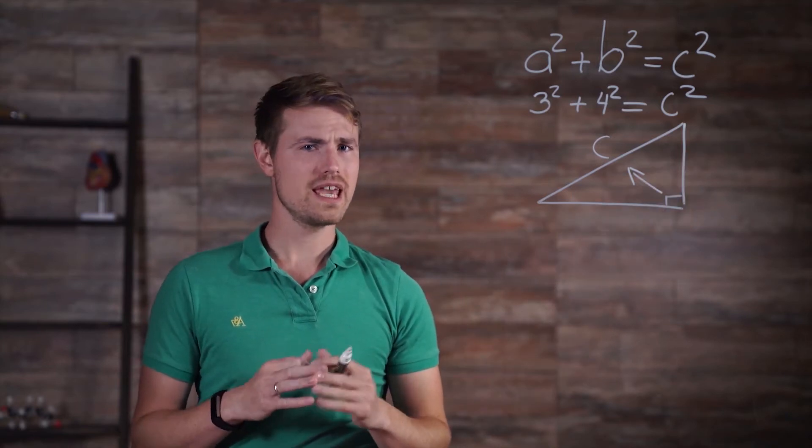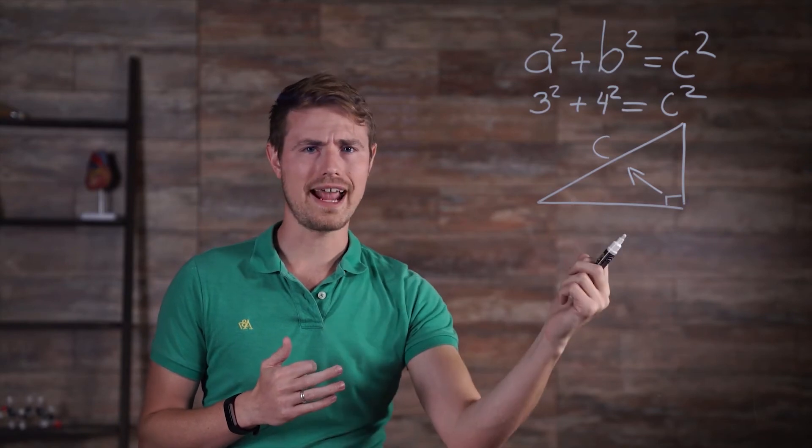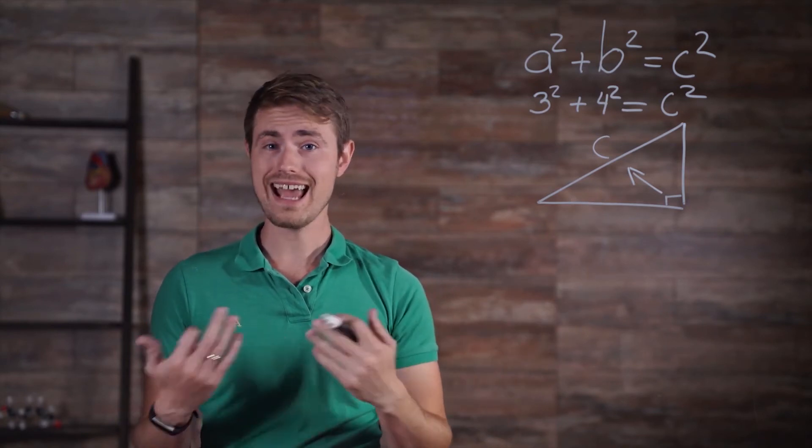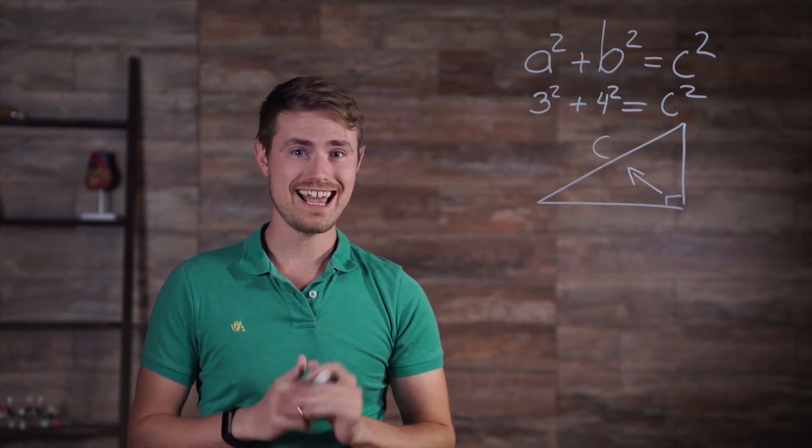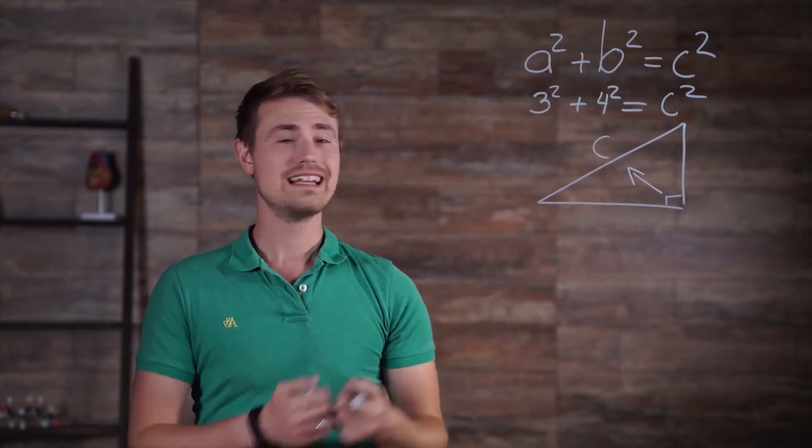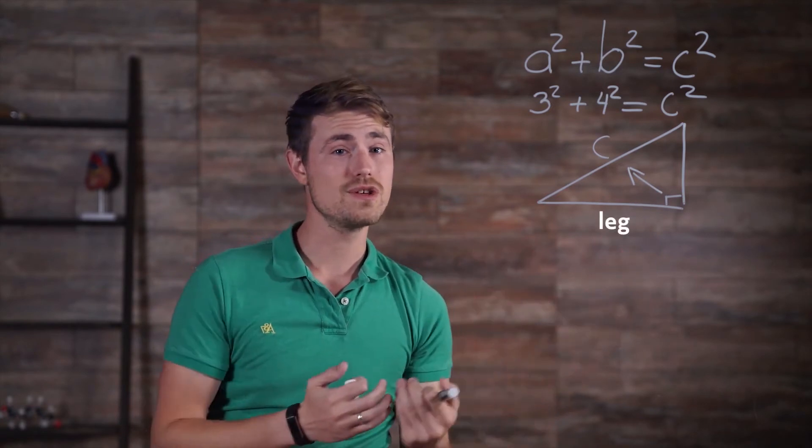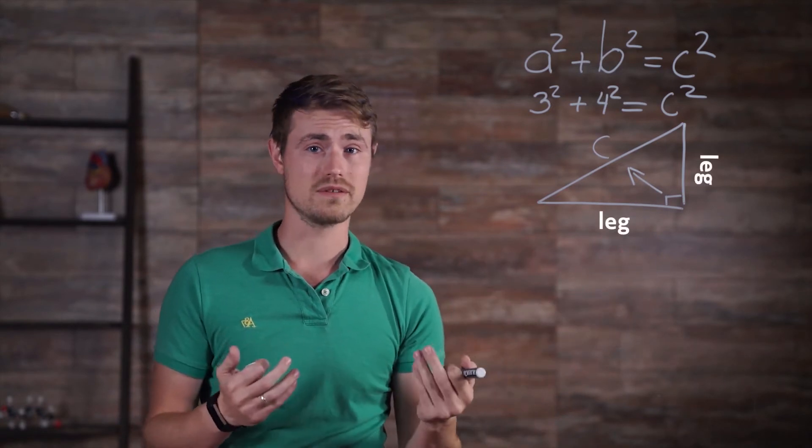You may be asking yourself, if c is always across from the right angle, how do I tell which of the other two is a, and which is b? It's a good question, and the answer is, it doesn't matter. Either of these two sides, which are called legs, can be used as a, and then just use the other one for b.